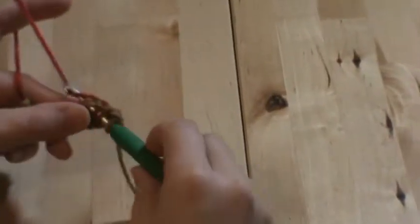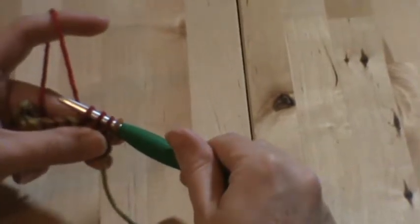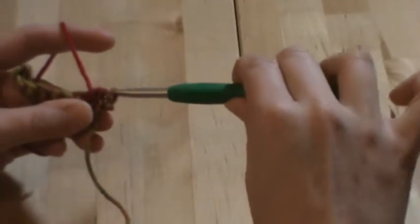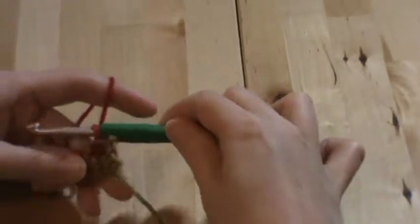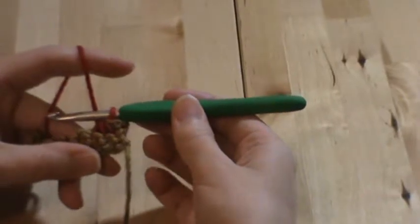Insert your hook, pull up a loop, and you have four loops on your hook. You're going to yarn over and pull through all four loops. And that is exactly how you single crochet three together.